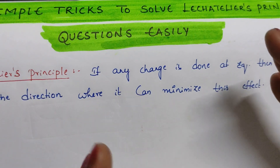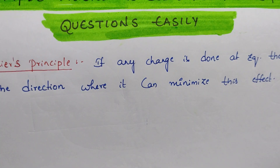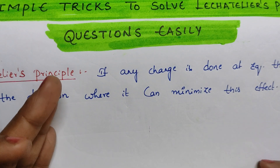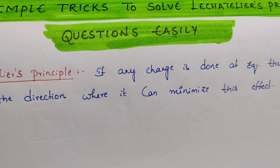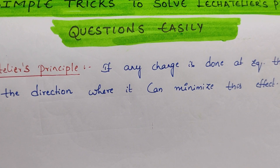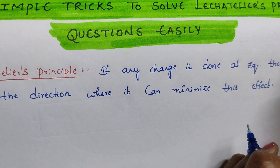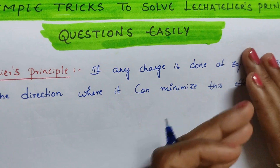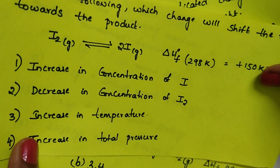For example, if you are increasing the pressure, then equilibrium tries to decrease the pressure. If you are increasing the concentration, then equilibrium tries to decrease the concentration. If you are decreasing the concentration of a product, then equilibrium tries to increase the concentration of that product. Whatever change you make, equilibrium shifts in a direction to decrease that change.